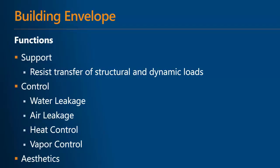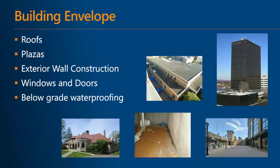Before we get into discussing the plan, we want to briefly describe the building envelope, which is the integration of materials and systems that enclose the interior of a building. It provides support to resist the transfer of loads, resists water and air leakage, resists heat loss and heat gain, and controls vapor movement into and out of the building. The components of the building envelope include roofs, plazas, exterior wall construction, windows and doors, and below-grade waterproofing. The maintenance of these components is critical to ensure the building envelope maximizes its service life in a cost-effective manner.